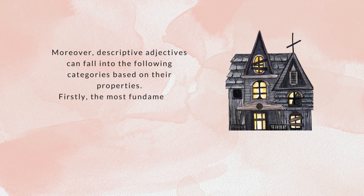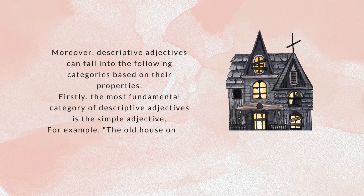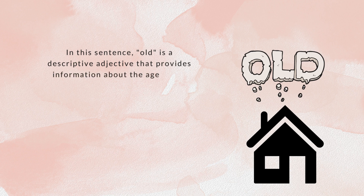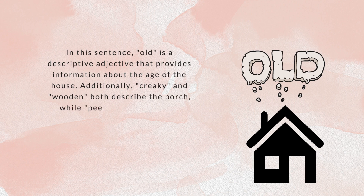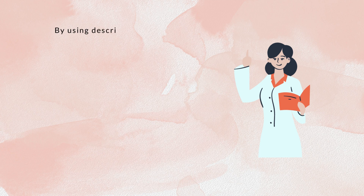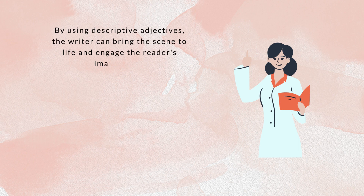Firstly, the most fundamental category of descriptive adjectives is the simple adjective. For example: 'The old house on the corner had a creaky wooden porch and peeling paint.' Here, 'old' describes the age of the house, while 'creaky' and 'wooden' describe the porch, and 'peeling' describes the paint. Together, these descriptive adjectives paint a vivid picture of the rundown house, bringing the scene to life and engaging the reader's imagination.